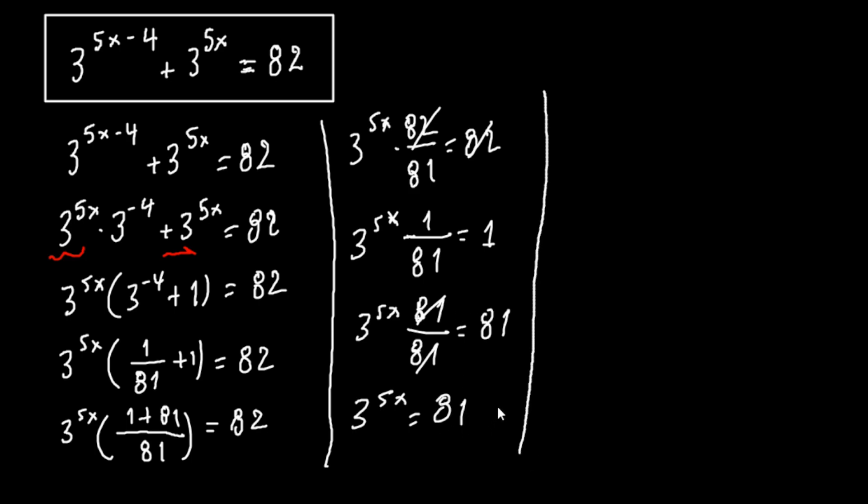Now we know that 81 is 3 raised to the 4th power. So we have 3 to the 5x equals to 3 to the 4th power. Here we have the same basis. So 5x equals to 4.